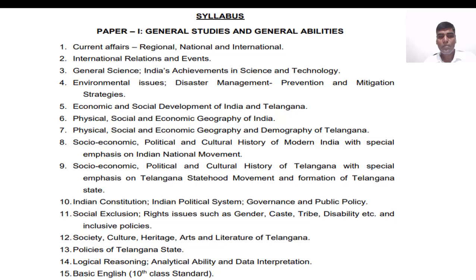There is also a Telugu Academy book on social exclusion. These books cost around 70 to 80 rupees. The twelfth topic — literary history of Telangana, cultural and social heritage — is covered in a slightly more expensive book. For policies of Telangana state, you can buy any book from a private publisher available in the market.